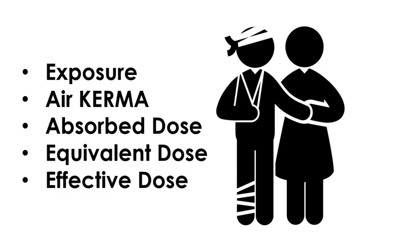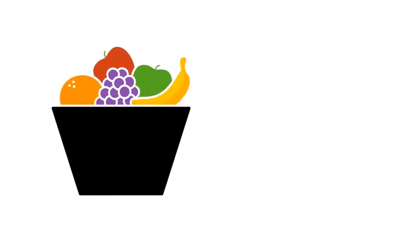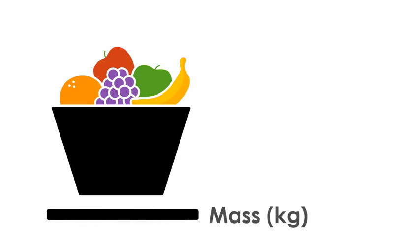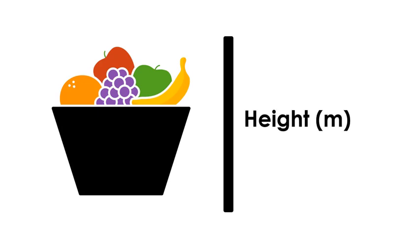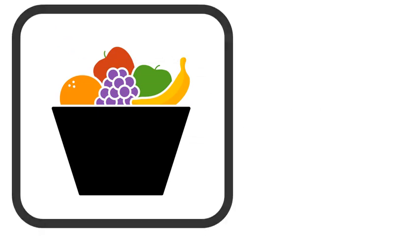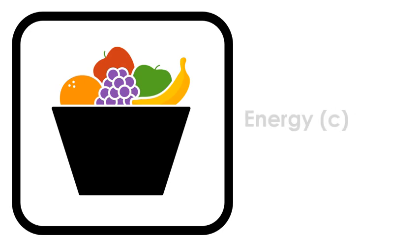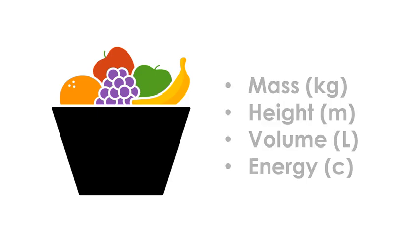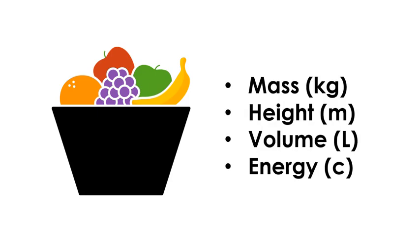These measurements are closely related to each other, but they are not the same. You could think of it like this — there are several ways that you could measure this basket of fruit. You could measure the mass in kilograms, but you could also measure the height in meters. You could measure the volume in liters. You could even measure the total energy of this fruit basket in calories. All of these measurements are related to each other in some ways, but they are obviously very different in other ways.